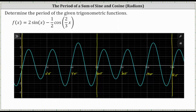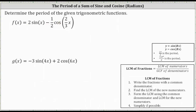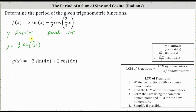Let's go back and see if we can figure this out algebraically by finding the period of each individual trig function. For y equals two sine x, the period is equal to two pi divided by b, where b is one, and therefore the period is two pi. For y equals negative one half cosine two thirds x, the period is equal to two pi divided by two thirds, which equals two pi times three halves, simplifying to three pi.